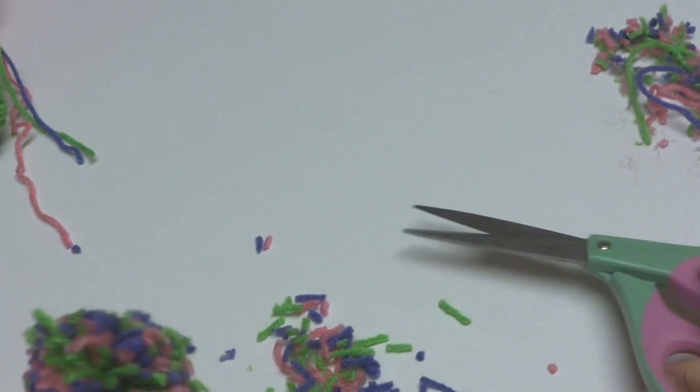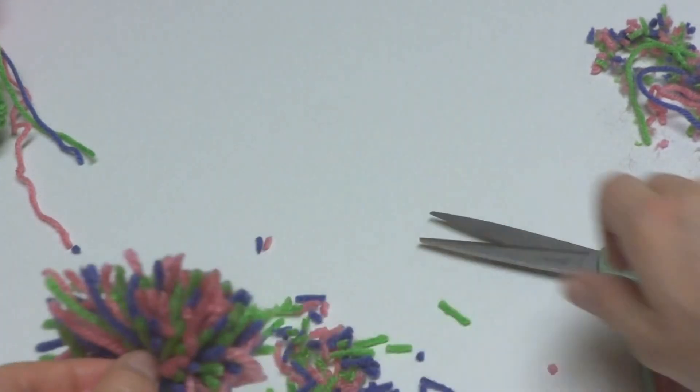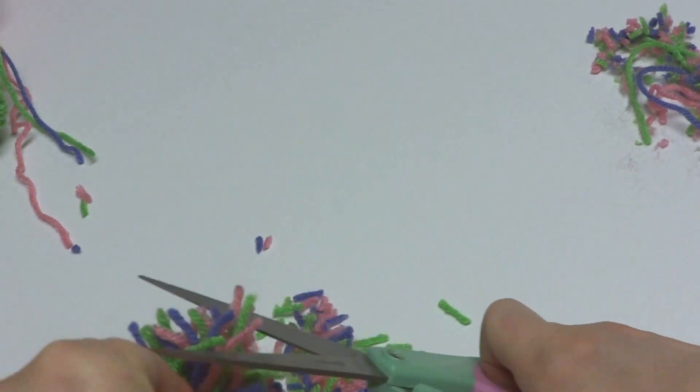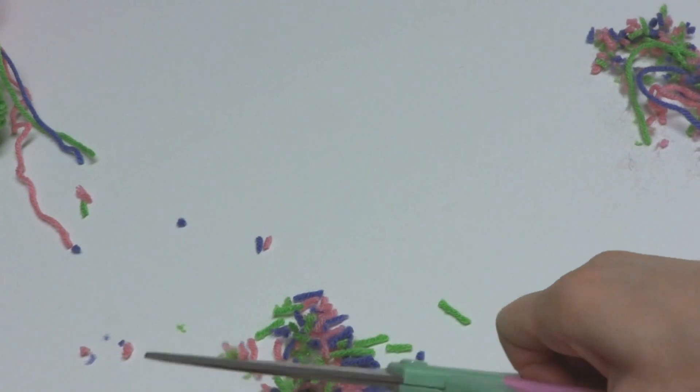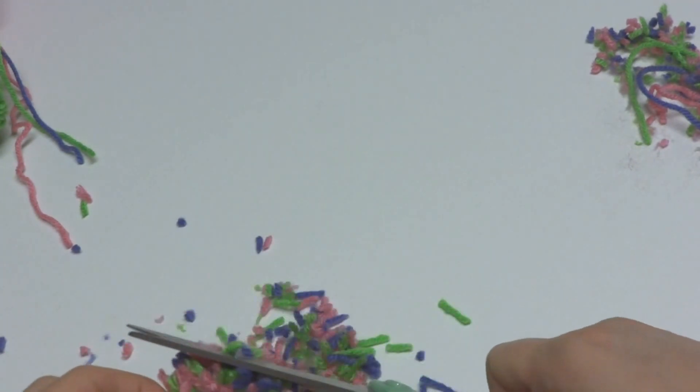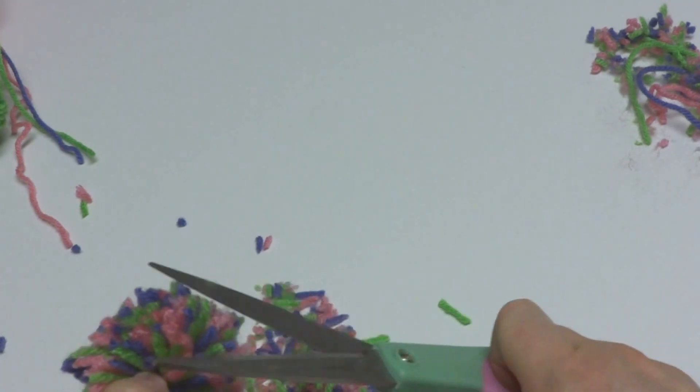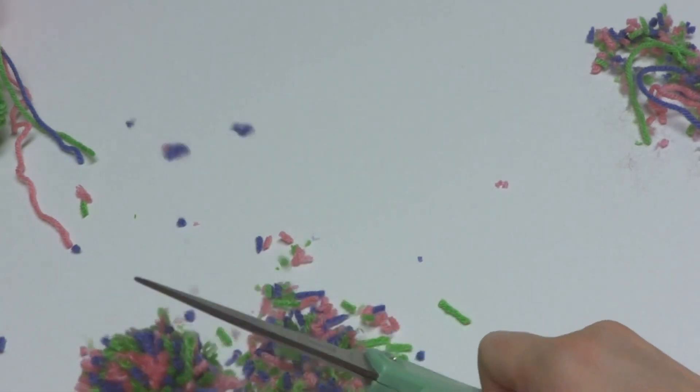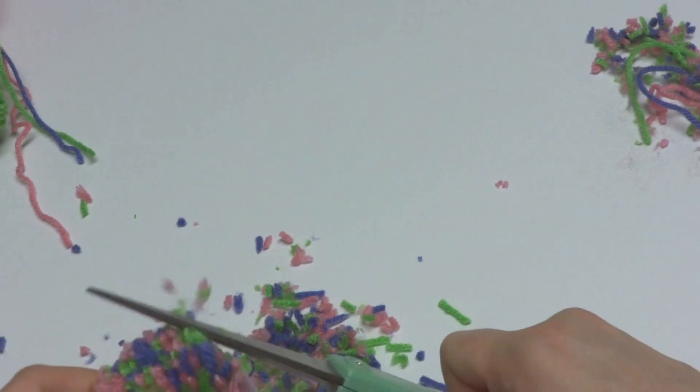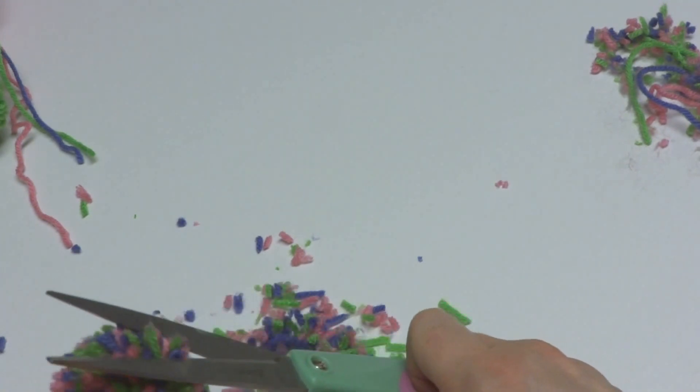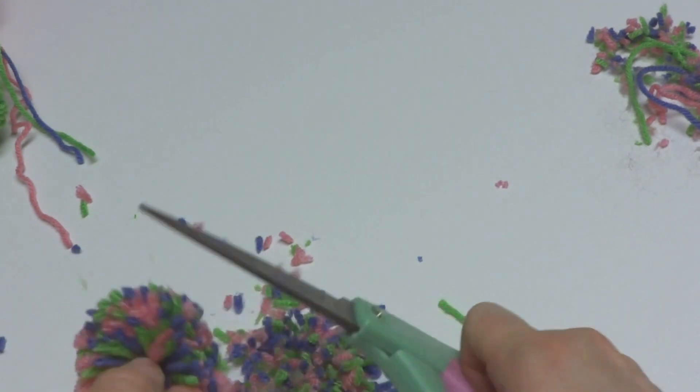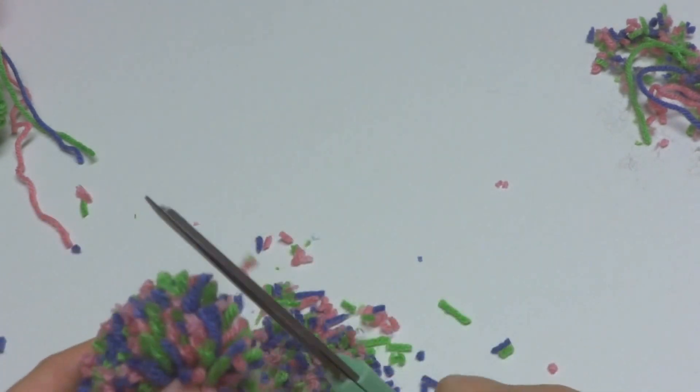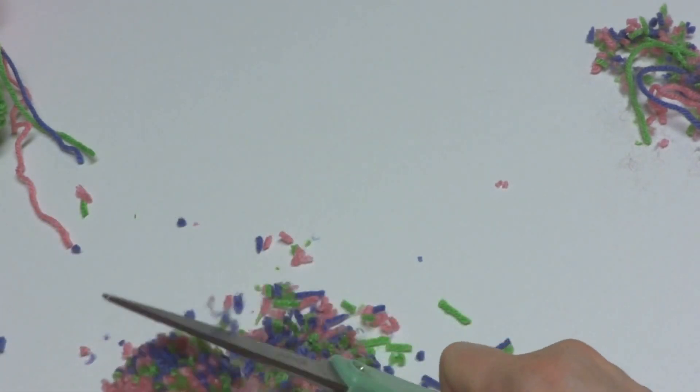You're going to have some extra strands and if you go along and kind of fluff it up as you go, it'll pull some of those longer pieces that may be folded up in there. So you're just going to kind of go along like this and just keep trimming, just like that. And you can trim this back as far as you want, or you can cut it close like I'm doing for a more dense look.